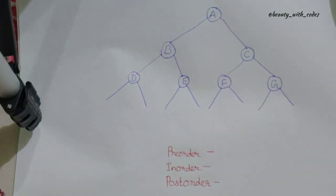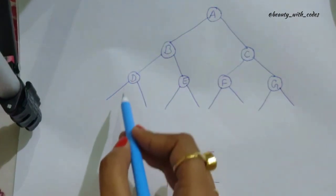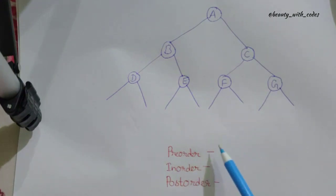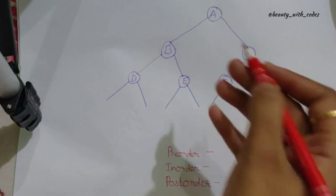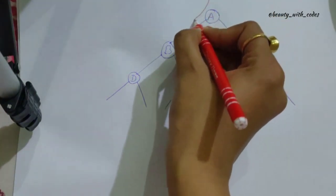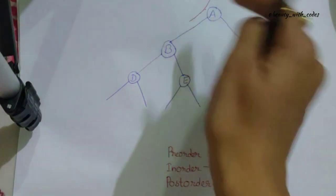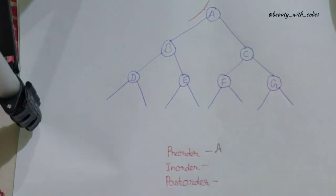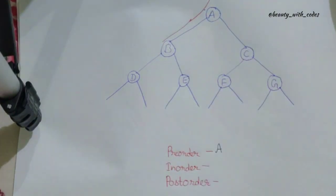Start traversing the tree from the root node. The rule is: whenever you visit any node for the first time, print it in pre-order; for the second time, print it in in-order; and for the third time, print it in post-order. Starting from A — visited for the first time, so A is printed in pre-order. Then B — visited for the first time, so B is printed in pre-order. Then D — visited for the first time, so D is printed in pre-order.